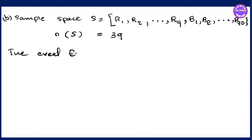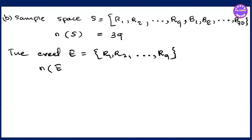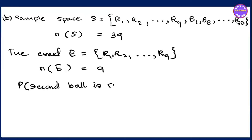The event E: R1 is named R9. Here the event N of E is equal to 9. So the probability B — the probability the second ball is red also equals N of E by N of S.